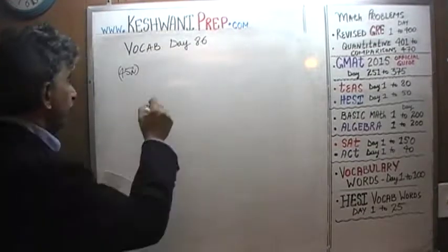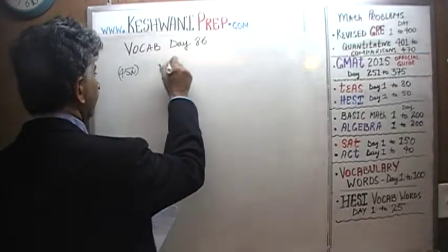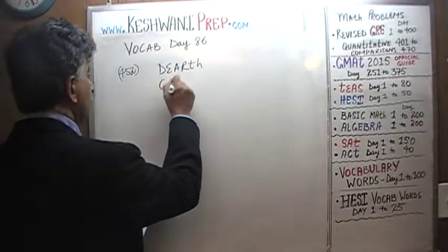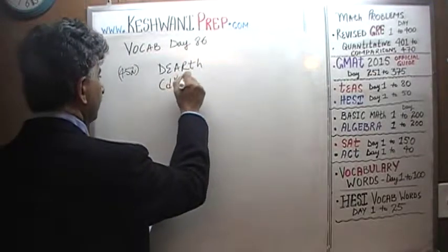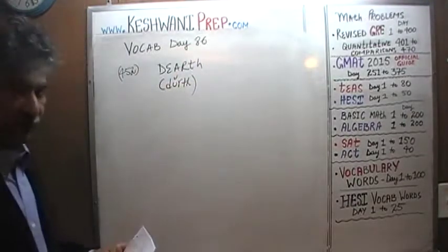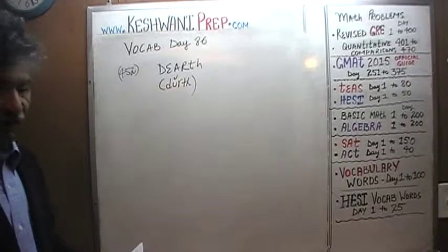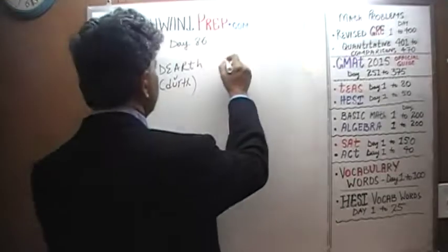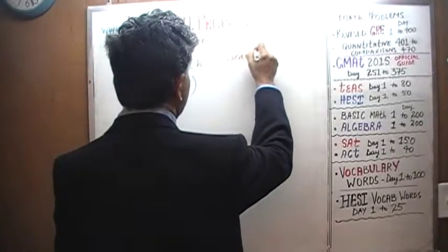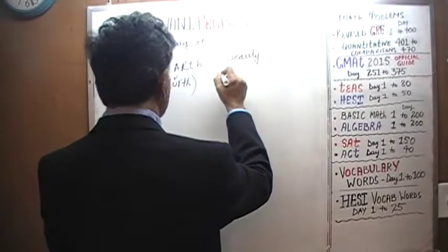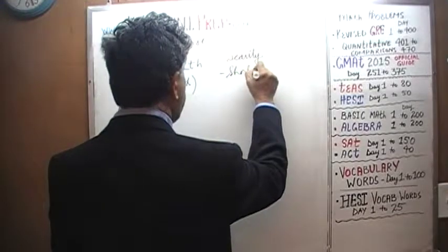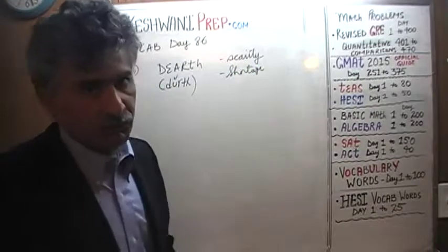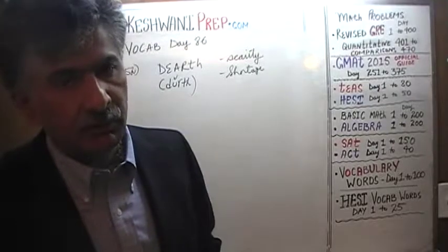Number 452 is where we start, and the very first word we learn today is dearth. As we said, they all have to do with scarcity and shortage. So that's what this word means — dearth means scarcity, shortage. If you have a shortage of something, if you have a scarcity of something, you have a dearth of it.